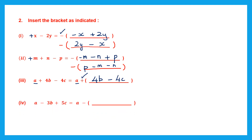Question 4. On the left hand side: a minus 3b plus 5c. On the right, a has been taken. So we have to insert the other terms inside the bracket. Check the sign — it is minus. So we have to change the sign of all terms to be inserted: minus 3b becomes plus 3b, or simply 3b, and plus 5c becomes minus 5c. That is our answer.